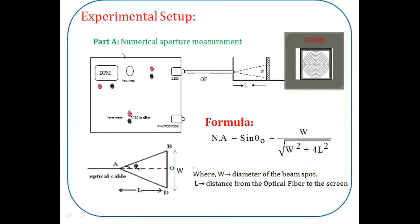The experimental setup for numerical aperture measurement is shown in the diagram. The optical fiber kit has a front panel with a display panel meter, LED, and photodiode. The LED is the light source, which is coupled with the fiber at one end. The other end of the optical fiber is connected to the numerical aperture jig. At a distance L, an output screen is placed, which has x and y axis coordinates and circular rings to measure the diameter of the spot. The LED converts electrical to light energy, which is transmitted inside the optical core to the destination.